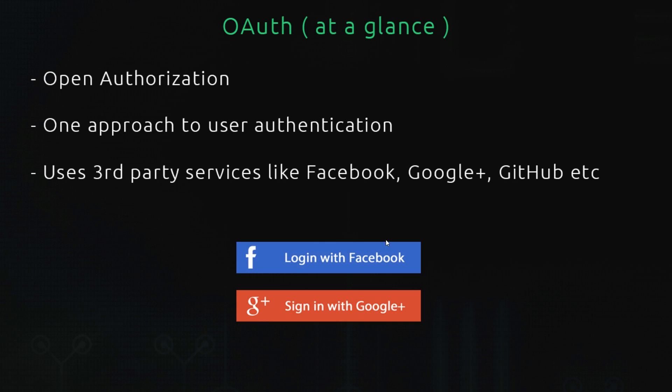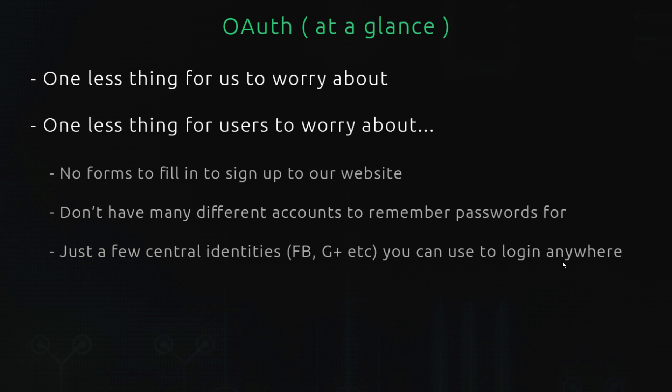So when you see a website using these kinds of buttons right here, you can be pretty sure it's using OAuth to authenticate users. When we click one of these buttons on a website, we're basically signing up or logging into that website using one of our social profiles. We hand control of the signing process over to these third-party services like Google or Facebook, and this is good for a couple of reasons. First, it's one less thing for us to worry about as a developer — it frees up time to focus on the cool bits of our application.